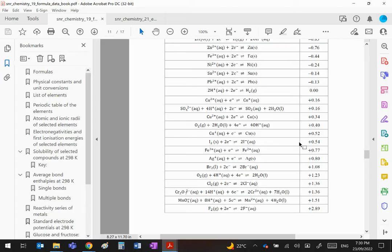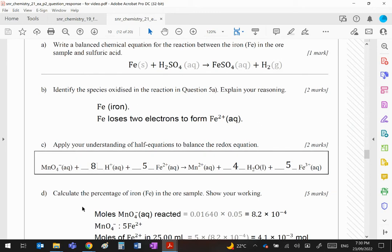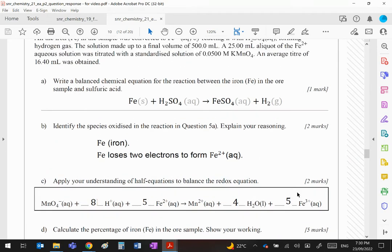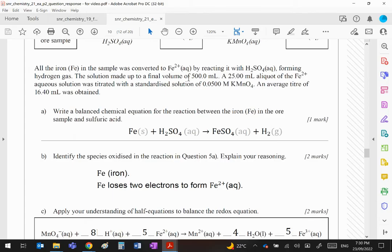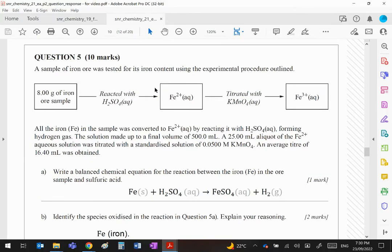Calculate the percentage of iron in the iron ore sample, show your working. They tell you that the final volume was 500, so that was the volume of this at the start. You then use 25 of it. Remember that difference, at the end you're going to have to use that. Manganate was used, there's the concentration, there's the titration volume.